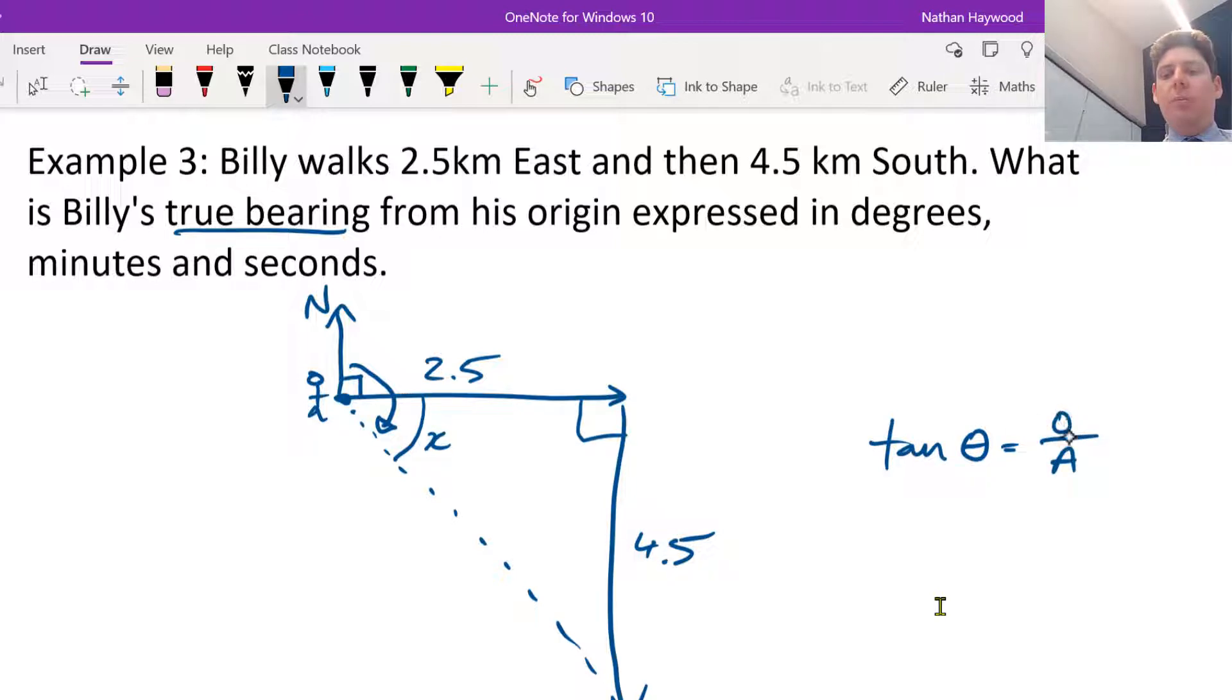SOHCAHTOA. Tan is opposite over adjacent, so the angle x is equal to 4.5 over 2.5.